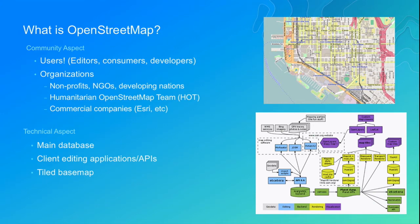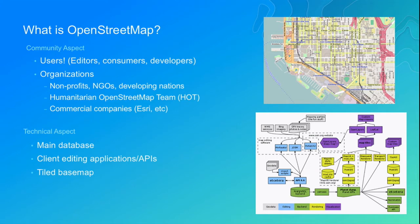There's also a technical aspect that's just as important. At the core, it's the main database — a single Postgres database hosted on donated hardware and maintained by volunteers. There are a handful of client editing applications and APIs that hook into that, letting you edit data into it or pull data out. The tile basemap is really what most people think of when they think of OpenStreetMap — just a raster-cached basemap. That's really the only out-of-the-box product that comes from OpenStreetMap, and it's pretty impressive that it's all maintained by people volunteering their time.